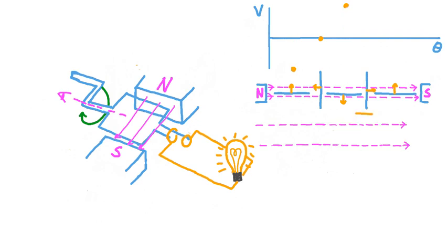Our coil keeps rotating through another 90 degrees, and now it's vertical once more. Over the very small time interval around this instant, the magnetic field lines move through the same side of the coil at both ends of the interval. The change in exposed area to the field lines is very, very small, and therefore the change in magnetic field through the loop is also quite small. Just like before when we had a vertically oriented coil, the induced potential difference is effectively zero. We plot that point on our graph.